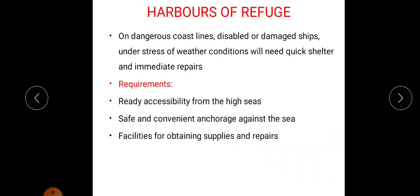Next is classification based on utility or the purpose for which the harbors are built. First, harbors of refuge. In this type, harbors are constructed for sheltering purpose. On dangerous coastlines, disabled or damaged ships under stress of weather conditions will need quick shelter and immediate repairs. So for sheltering or repairing works, this type of harbor is provided, hence known as harbors of refuge. The requirements are: ready accessibility from the high seas, safe and convenient anchorage against the sea, and facilities for obtaining supplies and repairs.